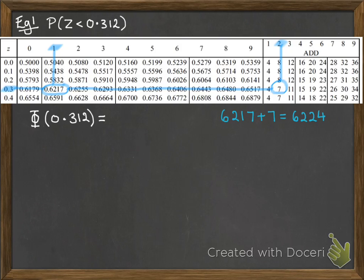So we do 6217 plus 7, that's 6224. So our final answer is 0.6224. So the probability that z is less than 0.312 is 0.6224.